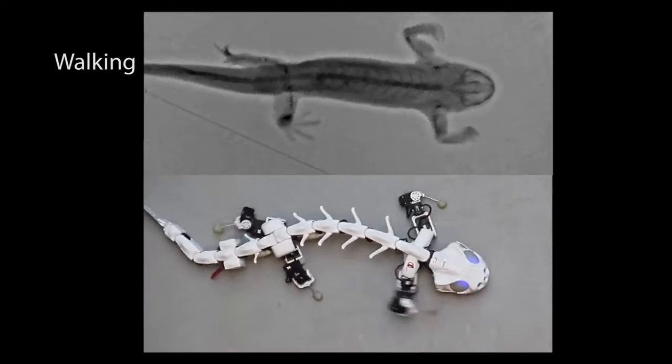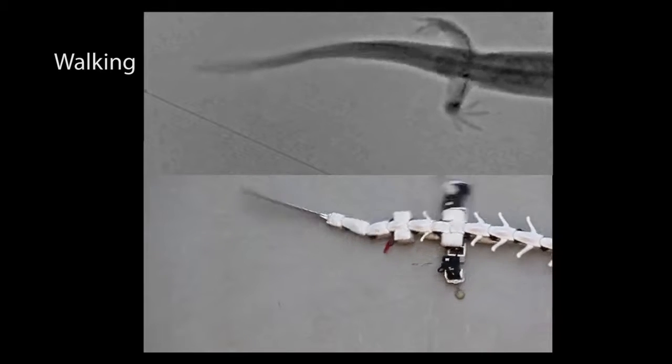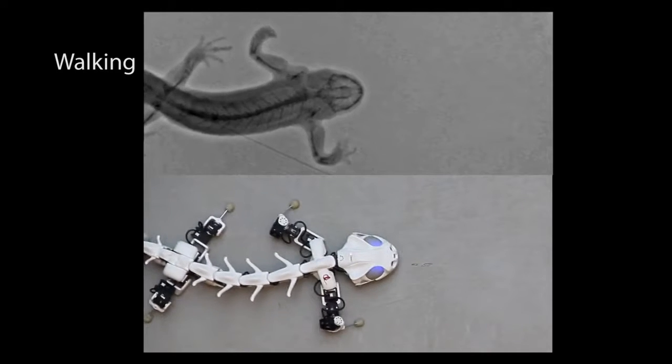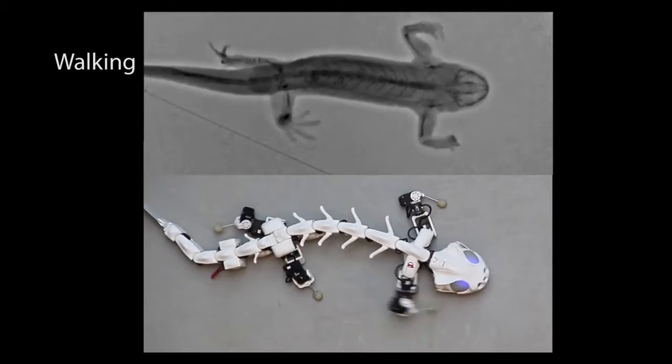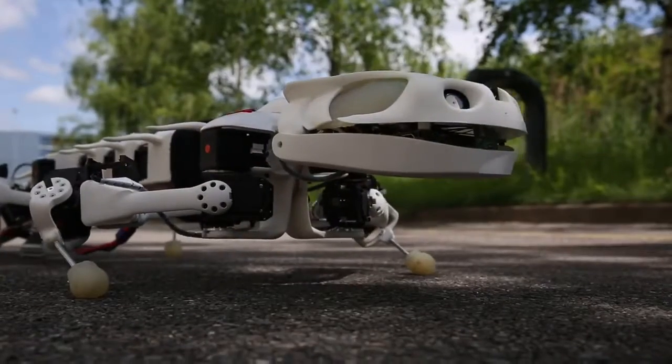We are interested in animal locomotion and we would like to make robots to study it. Animal locomotion is a very interesting interplay between the body, the spinal cord, and the environment. To understand this interaction, we really need a body, and that's where the robot is a key tool.